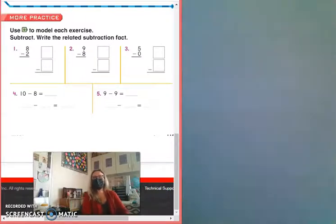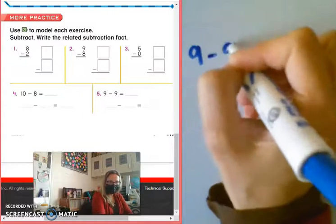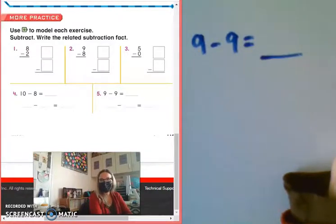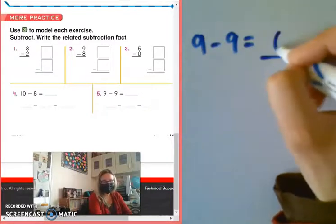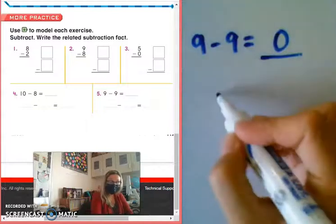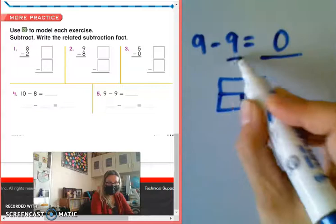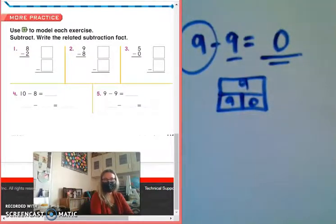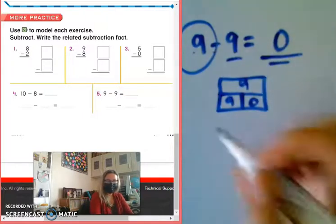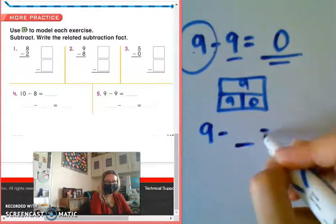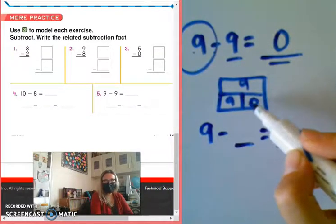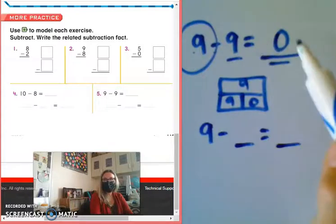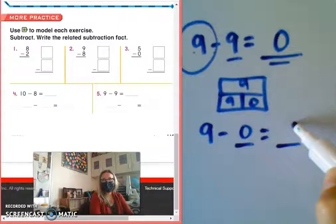Last one is going to go to Victoria. Number 5 says 9 minus 9, Victoria. If I have 9 cookies, and I eat 9 cookies, how many cookies do I have left? None. And what's the number for none? Zero. Now, I need to figure out the flip-flop. So if I think about this in part, part, whole, I know that one of my parts is 9. The other part is 0. My total, or my whole, is 9. So my two subtraction sentences would be 9 minus 9 equals 0. And 9 minus what, Victoria?